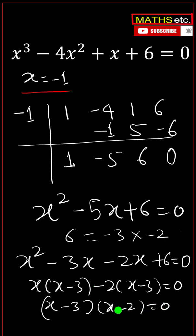So the two roots we get from here are x equals to 2 and x equals to 3. So the three roots of this cubic equation are minus 1, 2, and 3. Thank you.